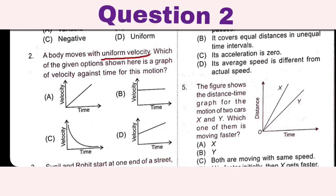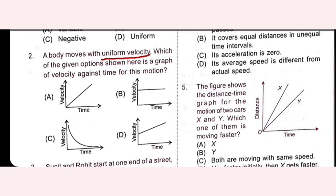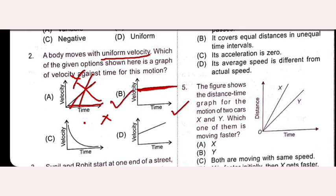If a body moves with uniform velocity, velocity is constant — it does not change. Which of the given options shows a graph of velocity against time for this motion? Velocity is on the y-axis and time is on the x-axis. If time increases but velocity remains constant, that is option B, the right option, because the question states the body moves with uniform velocity.